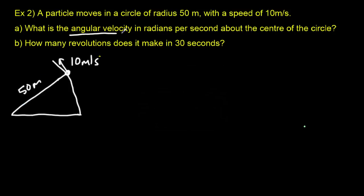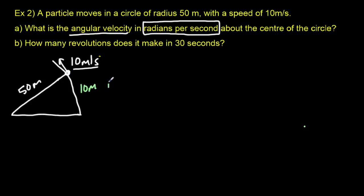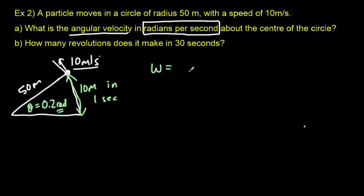We're searching for the angular velocity, with units of radians per second. If the object is moving at 10 meters per second, then in one second this arc length would be 10 meters. Now 10 meters is only one-fifth of the radius of 50 meters, meaning this angle is 10 divided by 50, or 0.2 radians. In other words, the angular velocity is 0.2 radians per second.